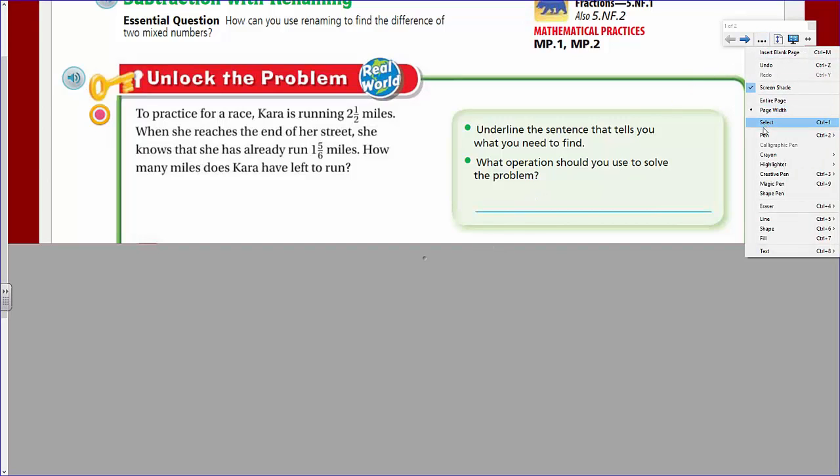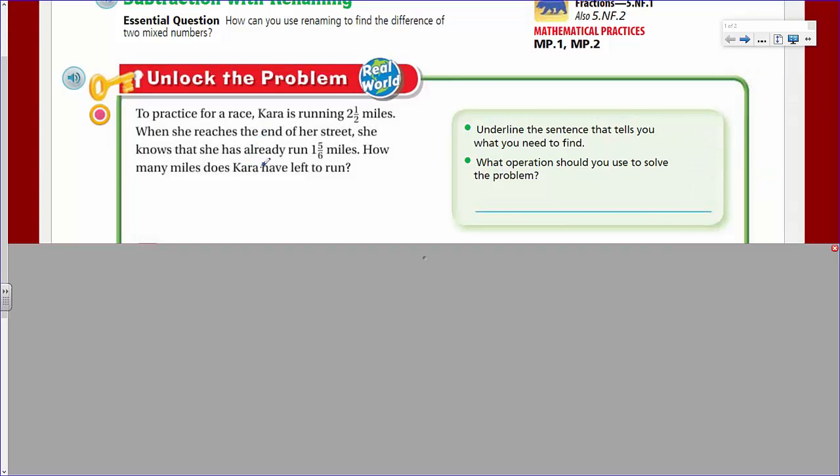In this case, I'm going to go ahead and, let me get another pen here. Basically, underline the sentence that tells you what you need to find. Okay, that's really obvious, right? Because it comes in the form of a question. When somebody asks you, hey, like your teacher, what sentence in that problem tells you what you need, you know right away that you're looking for that question mark.